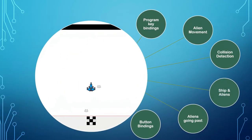We're going to have to program a number of things: key bindings so the ship can move backwards and forwards and up and down, automatic alien movement that interacts with what the ship is doing, collision detection, graphics for the aliens and ship, scoring when aliens pass the red line, and button bindings so the controls respond.